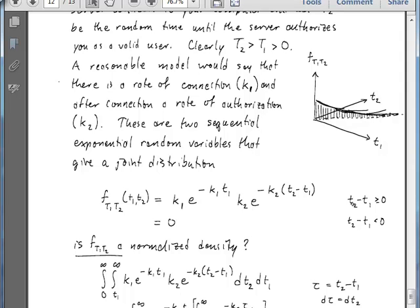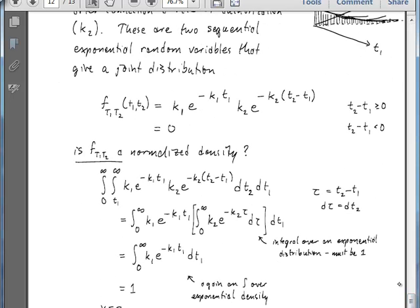We're requiring that T2 minus T1 be greater than or equal to zero. If T2 minus T1 is less than 0, this distribution just doesn't have any support in that area.